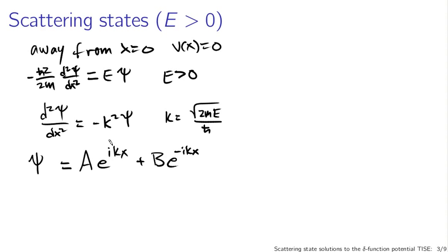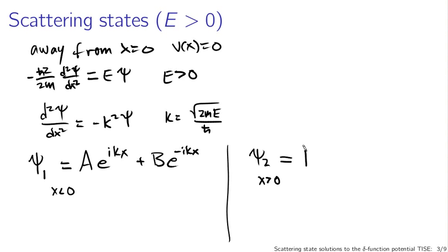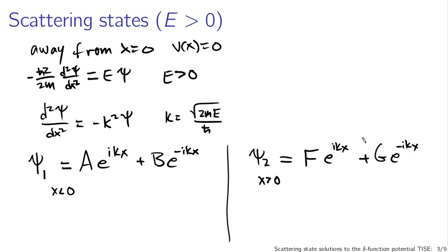When we take the second derivative of these exponentials, we bring down ik squared, which gives us minus k squared. Since we're talking only about regions away from the delta function, we actually have two general solutions: psi1 for x less than zero, and psi2 for x greater than zero. Psi2, to the right of the delta function, is F e^{ikx} + G e^{-ikx}. I've used F and G rather than C and D to avoid any ambiguity with future constants such as E.